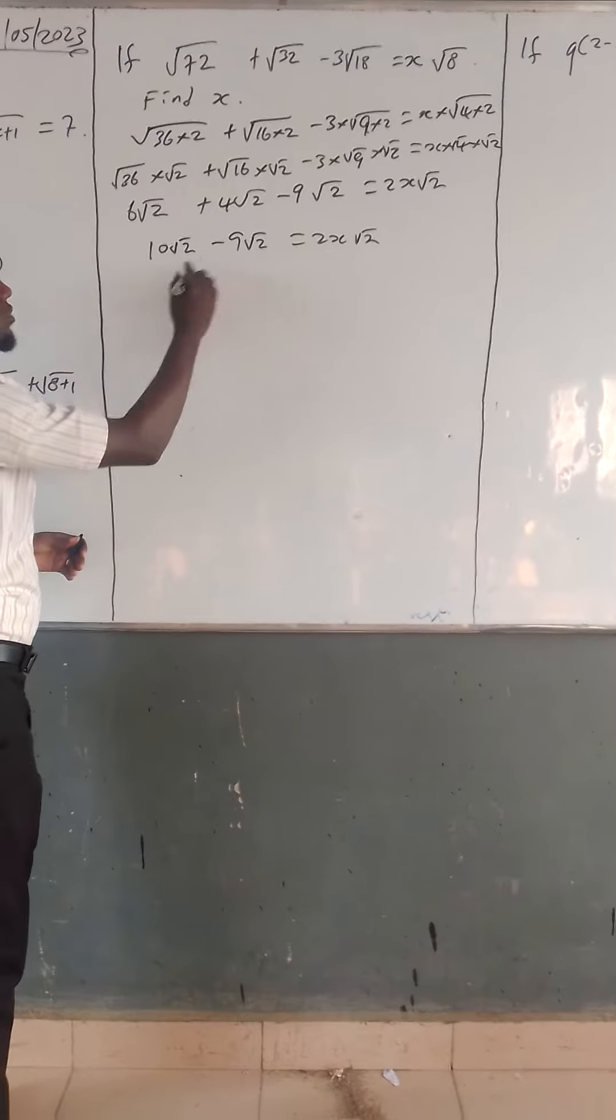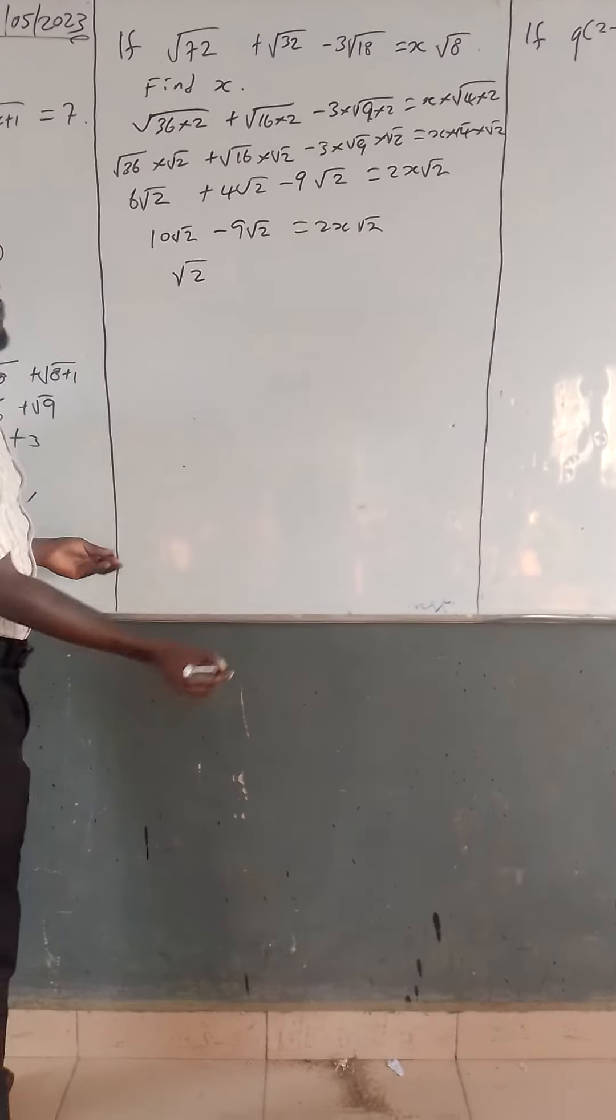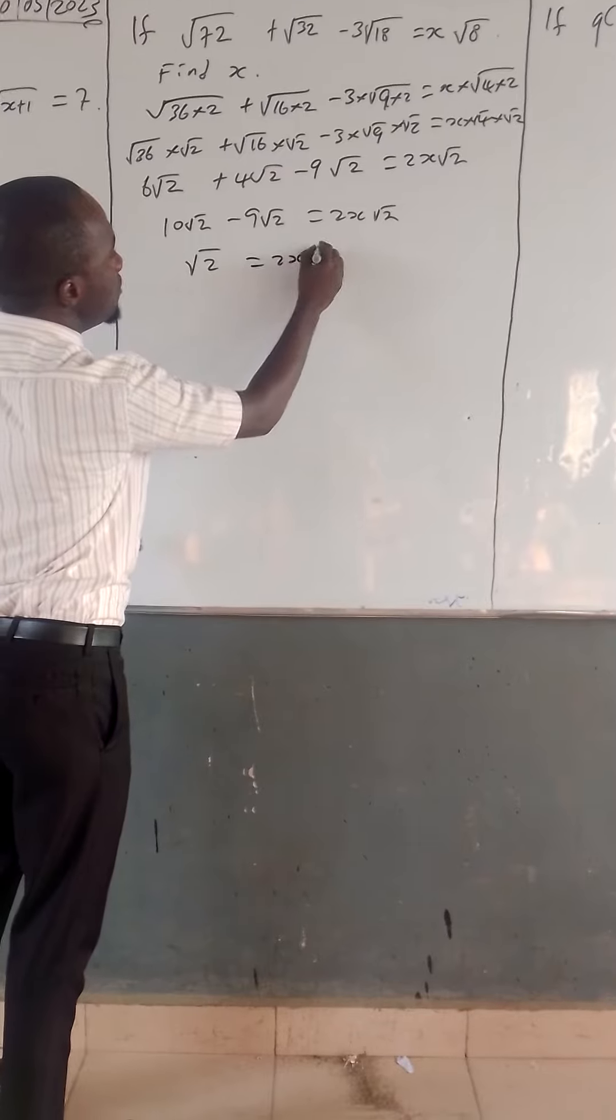10 root 2 minus 9 root 2 equals 1 root 2, which equals 2x root 2.